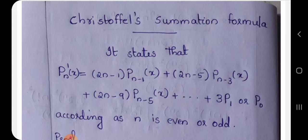Pn' of x equals (2n-1) Pn-1 plus (2n-5) Pn-3 plus etc. The last term: when n is even it is 3P1, and when n is odd it is P0.